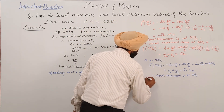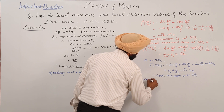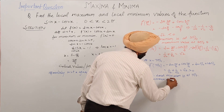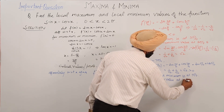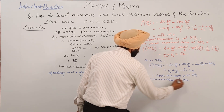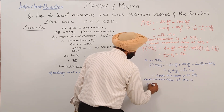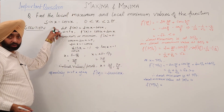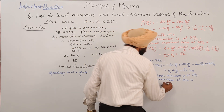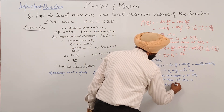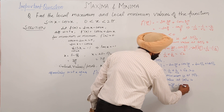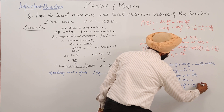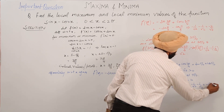The corresponding local minimum value at x = 7π/4 is f(7π/4) = sin(7π/4) minus cos(7π/4) = minus 1/√2 minus 1/√2 = minus √2.